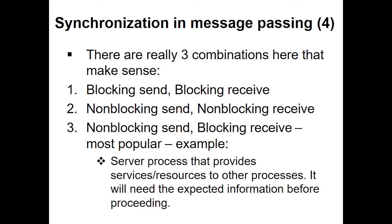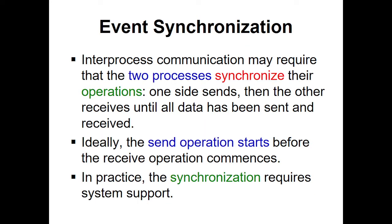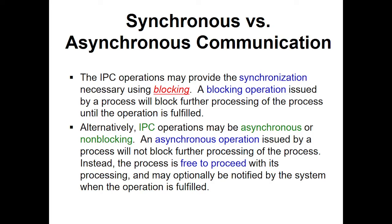The most preferred way of communication is non-blocking send and blocking receive. For instance, a server process that provides services and resources to other processes needs the expected information before proceeding. A non-blocking send allows the server to receive additional requests while also dealing with one particular request through a blocking mechanism. Before two processes communicate, they need event synchronization — one side sends, the other receives, until all data has been sent and received. This is typical of TCP, which provides this event synchronization before communication happens.